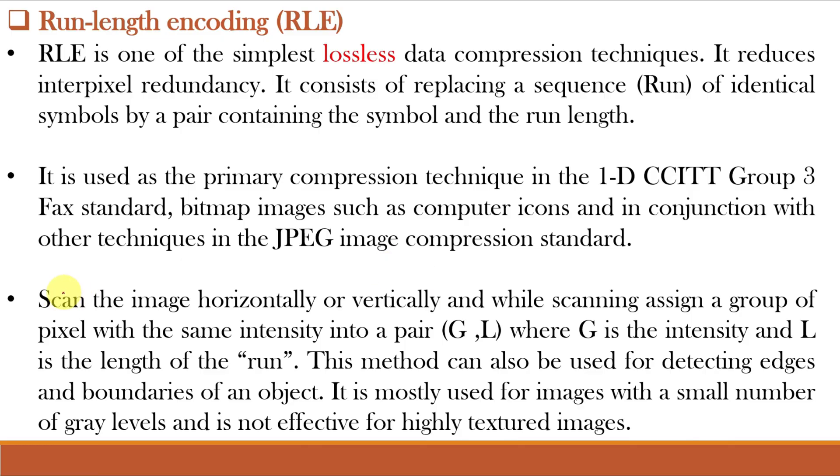How to perform run length encoding? Scan the image horizontally or vertically and while scanning, assign a group of pixels with the same intensity into a pair G,L where G is the intensity and L is the length of the run. This method can also be used for detecting edges and boundaries of an object. It is mostly used for images with a small number of gray levels and is not effective for highly textured images.